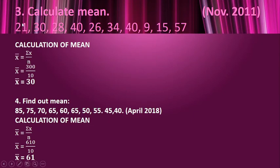In this situation, we have 10 values given, so n is 10. The total of those values is 300. So x̄ = σx / n = 300 / 10, which is 30.